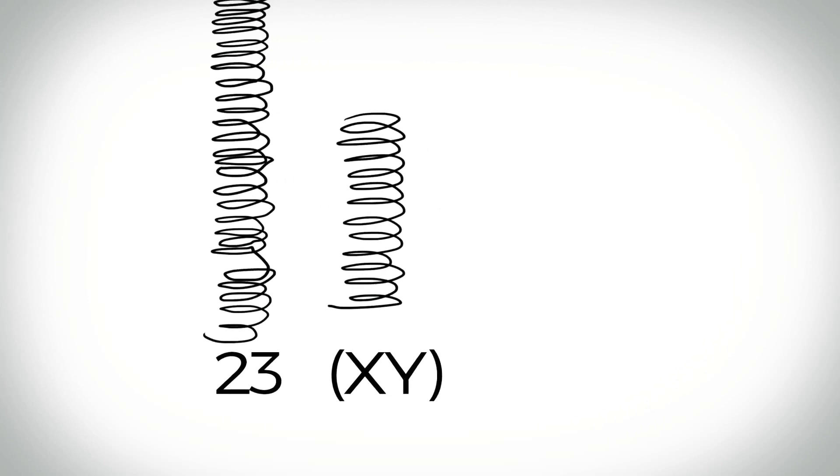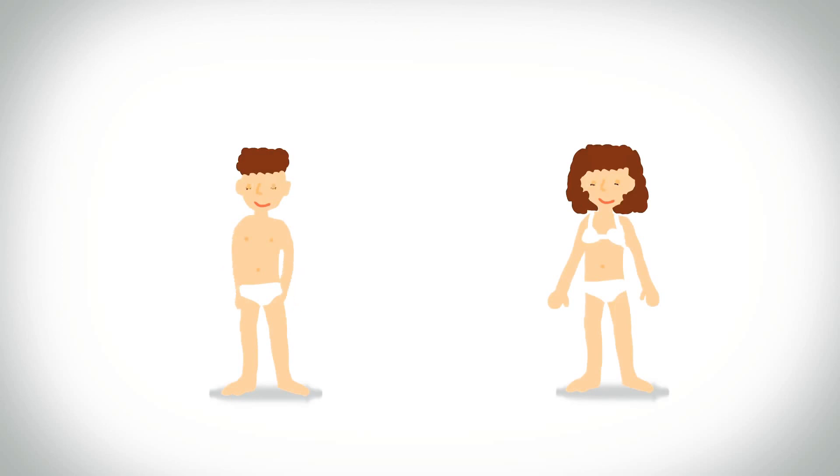The 23rd pair, the sex chromosomes, differ between males and females. Females have two copies of the X chromosome, while males have one X and one Y chromosome.